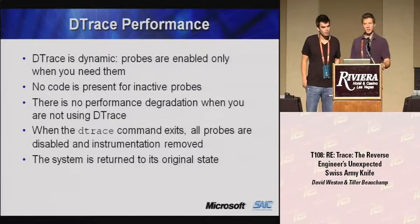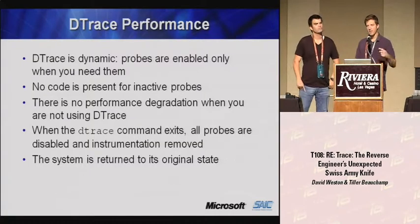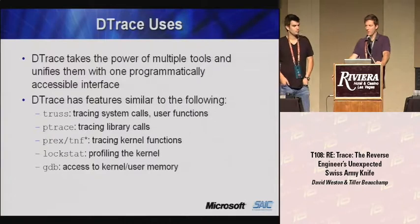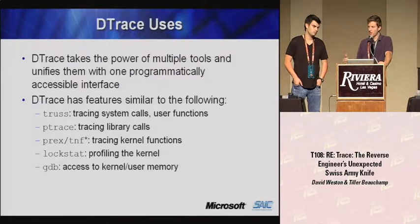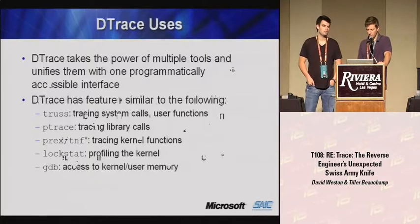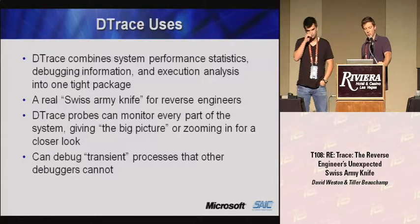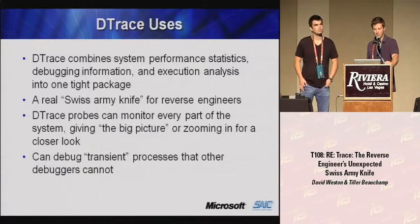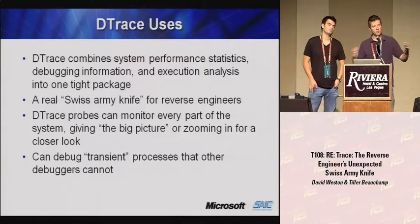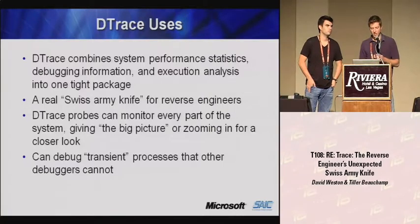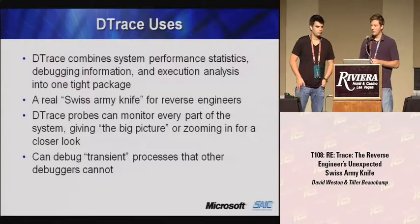The bottom line for performance is there's really no impact when DTrace is not active, and when it is active it's been streamlined to be most efficient. DTrace combines system performance statistics, debugging information, and execution analysis into one small framework. It's very useful for reverse engineers because we want to answer general questions about behavior, then zoom into a specific situation and inspect exactly what the application is doing. We also have the ability to trace multiple applications at once.